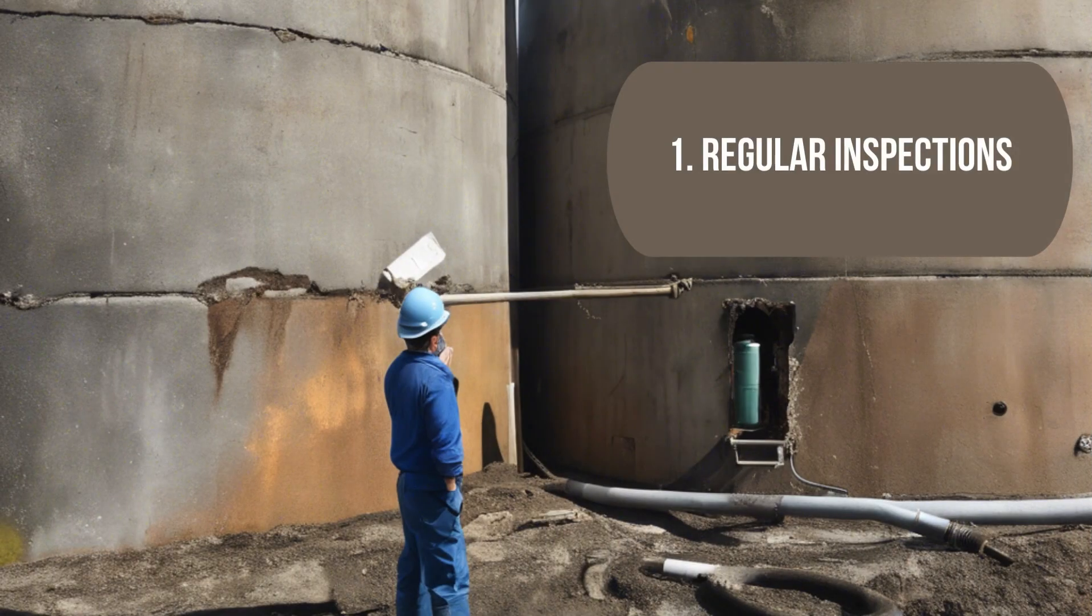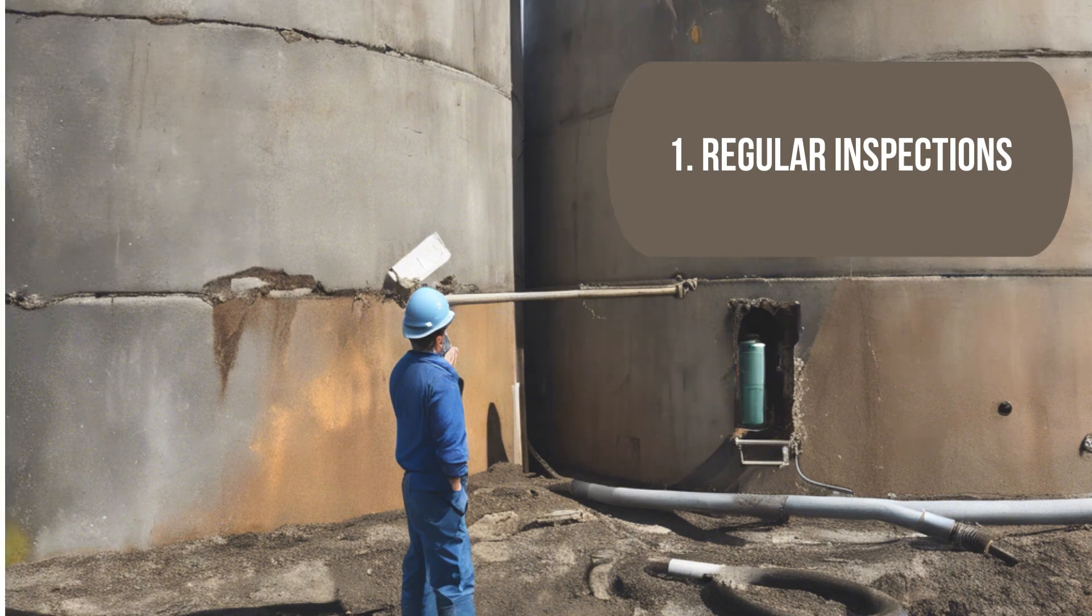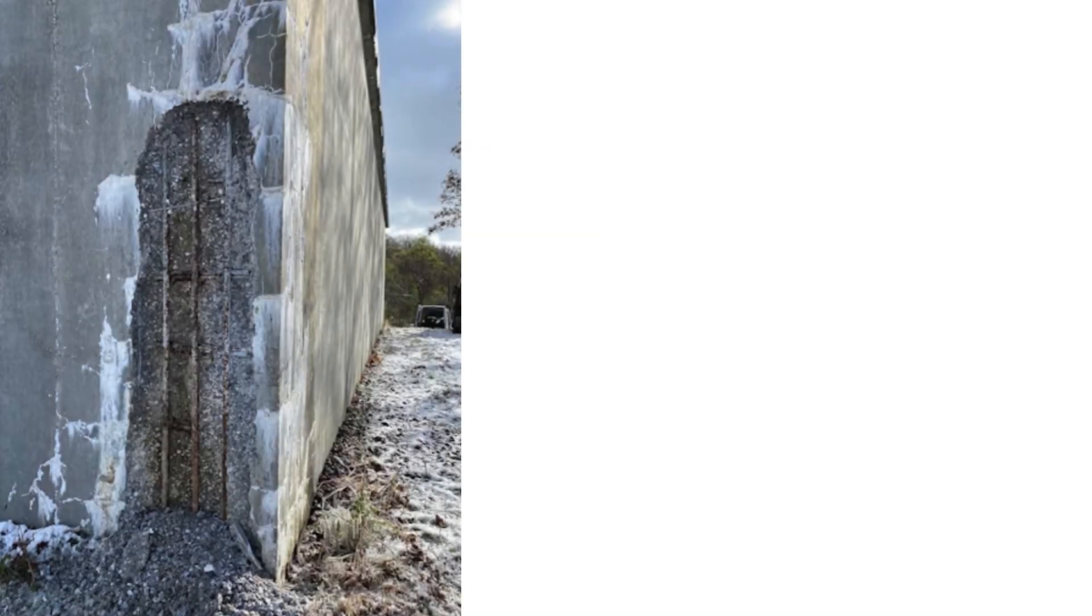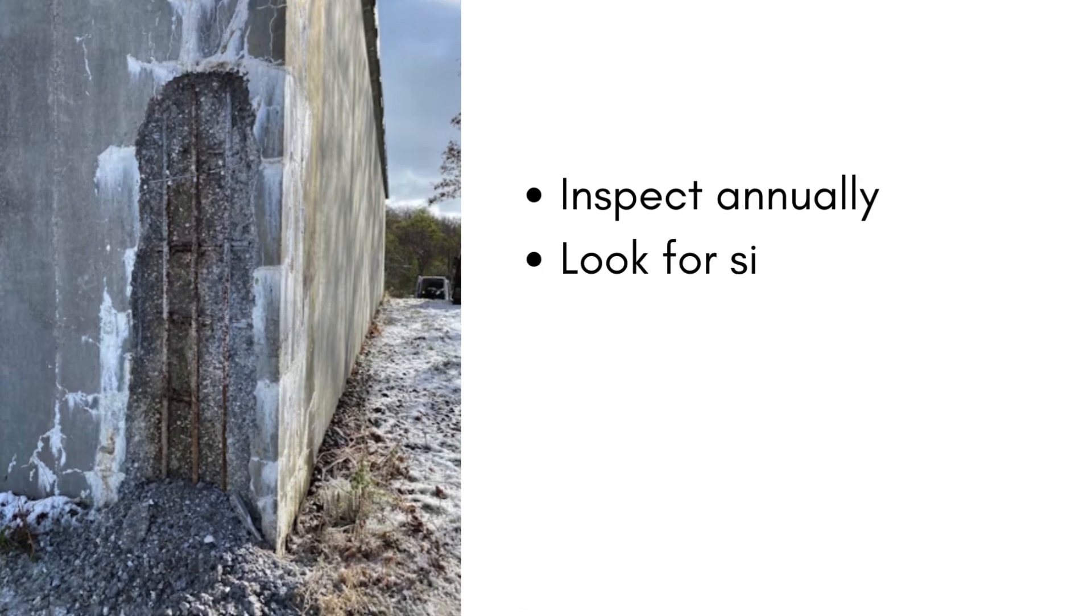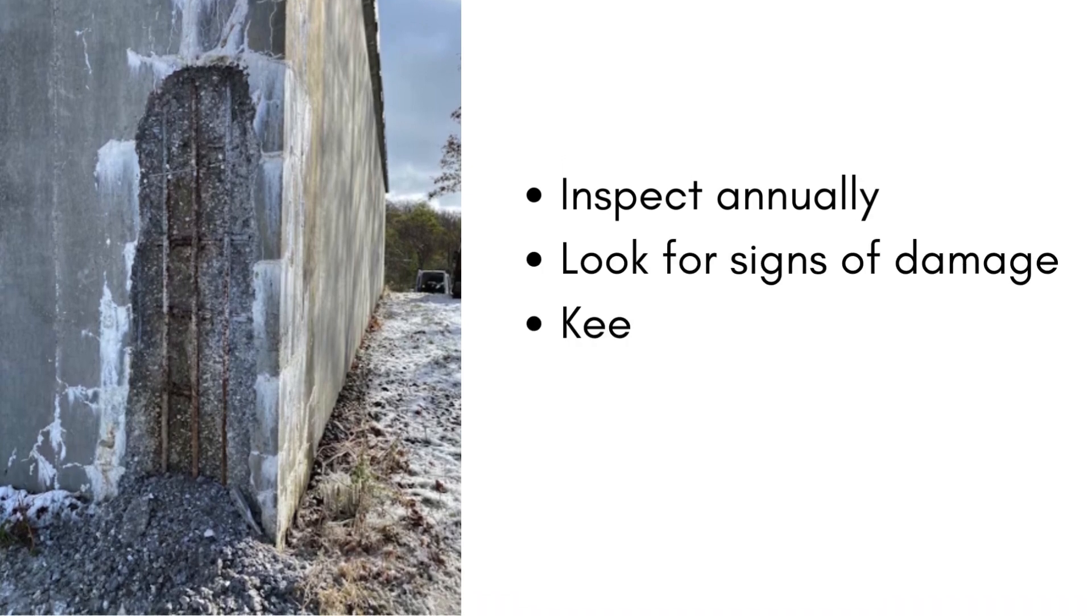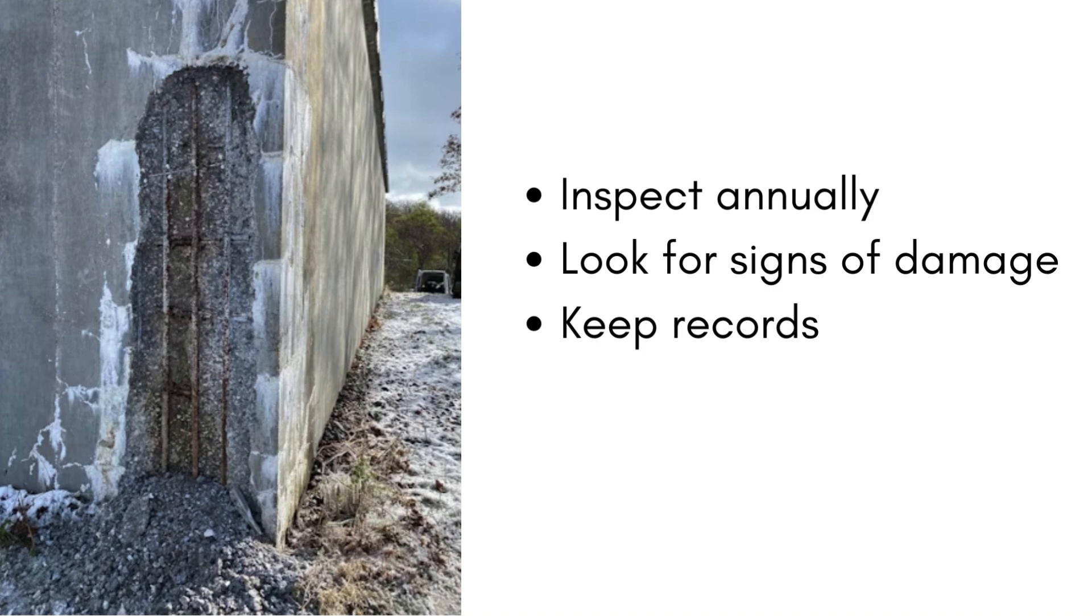1. Regular Inspections. Conduct thorough inspections of your tank at least once a year. Check for cracks, leaks, discoloration, or spalling. Document the findings of your inspections for future reference.